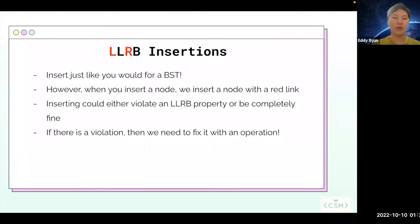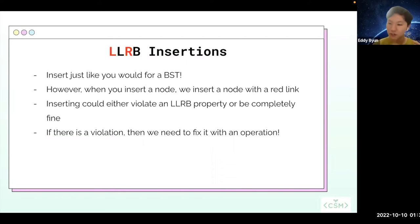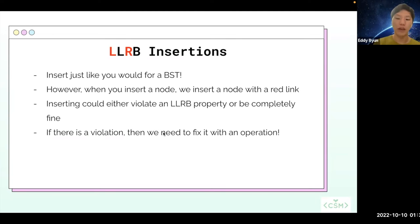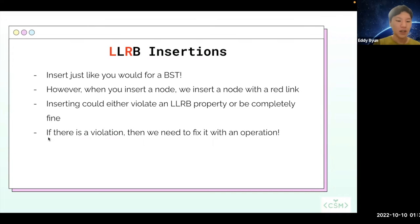Now I want to move on and talk about LLRB insertions. When you insert to an LLRB, you first insert just like you would for a BST. So if an element is less than the root, we move and look in the left subtree; if an element is greater than the root, we go to the right subtree and search there. However, when you insert a node, we insert it with a red link. And this insertion could either violate an LLRB property or it can be completely fine. If there is a violation, we do need to fix it with one of the operations mentioned earlier.